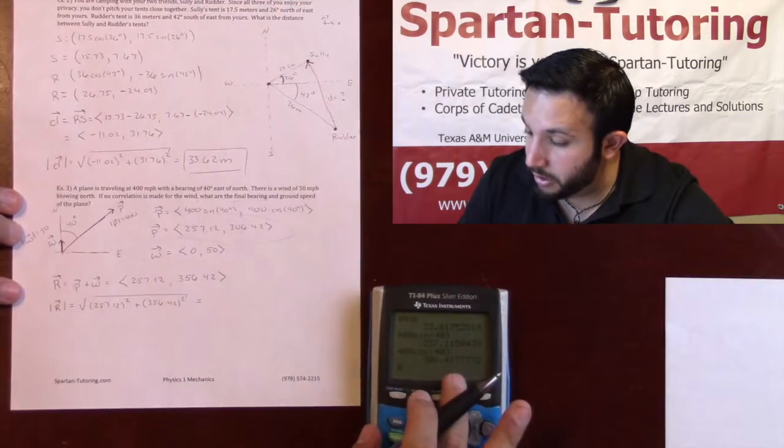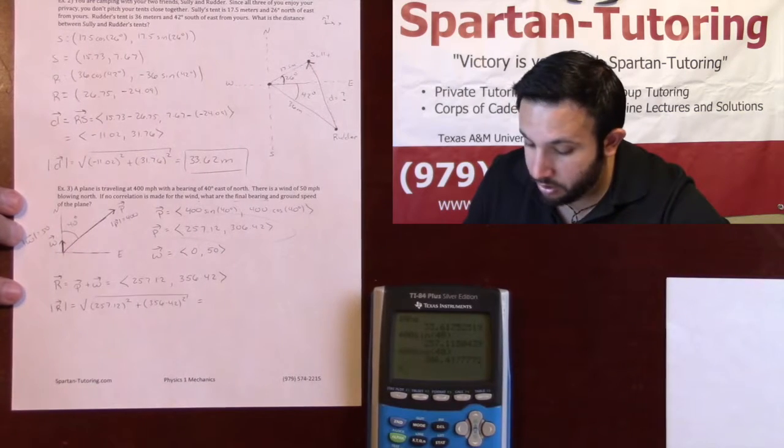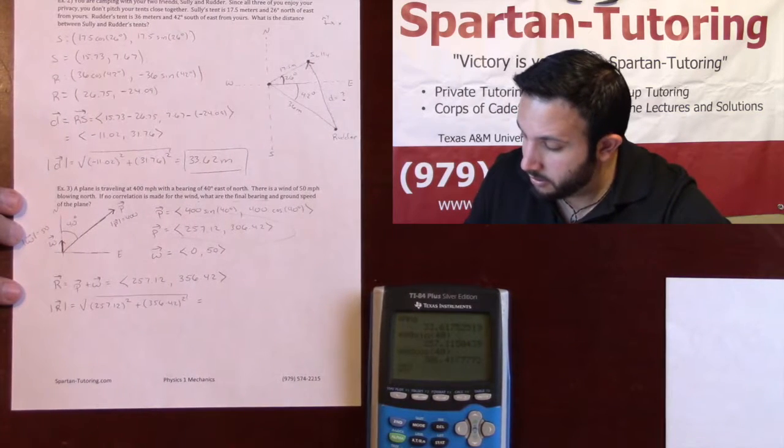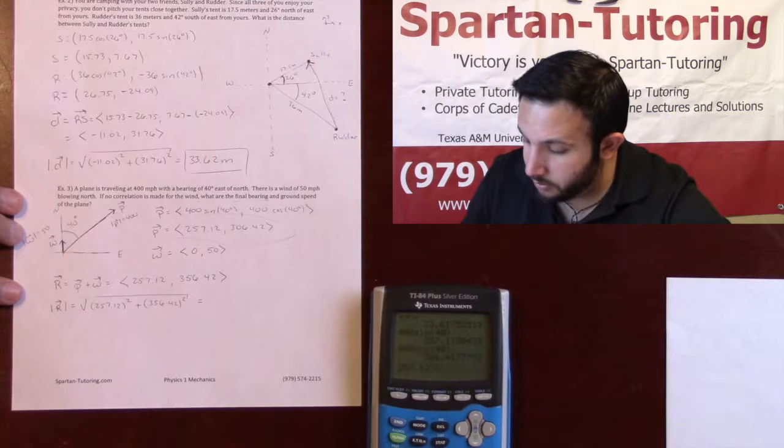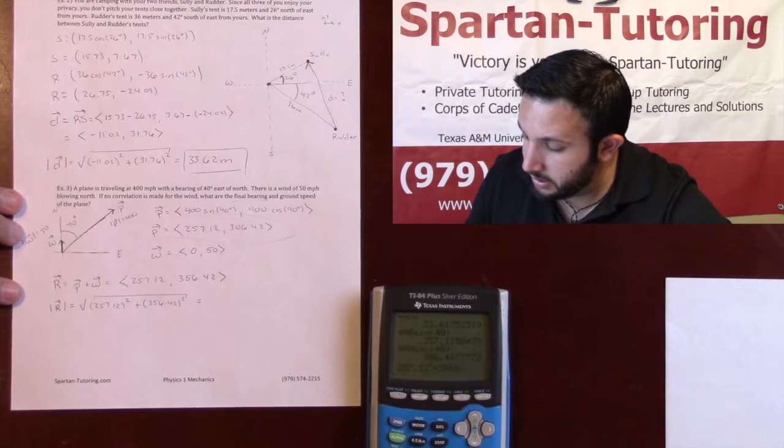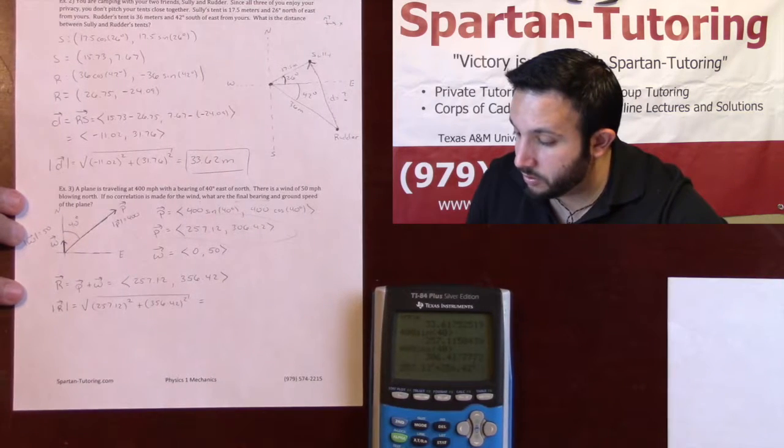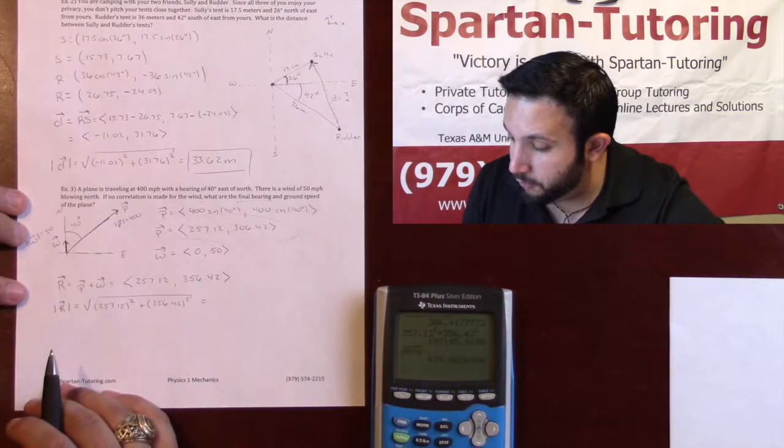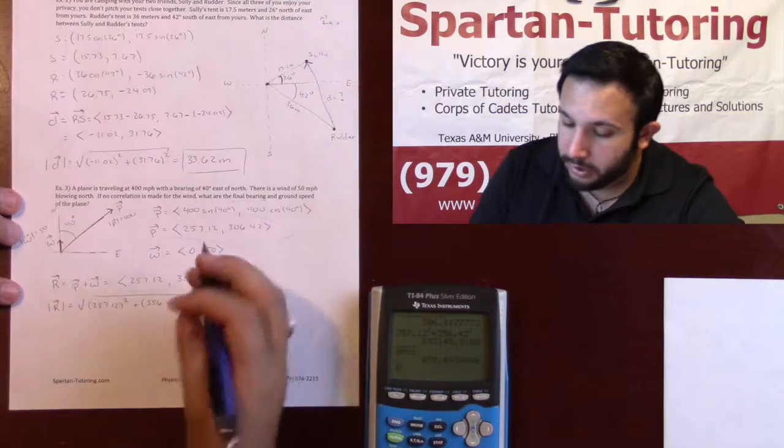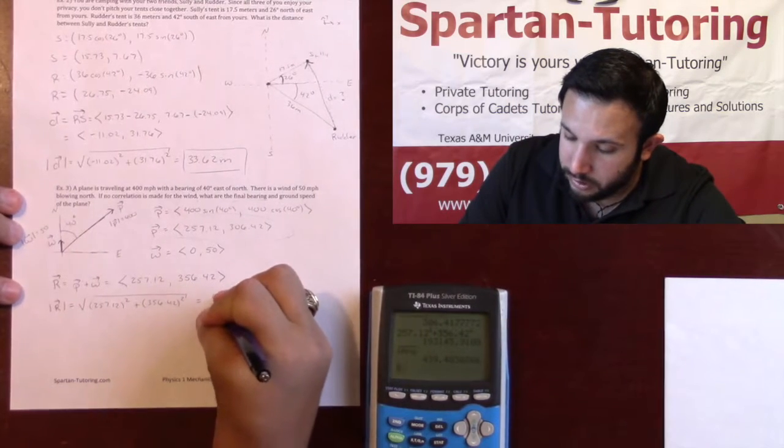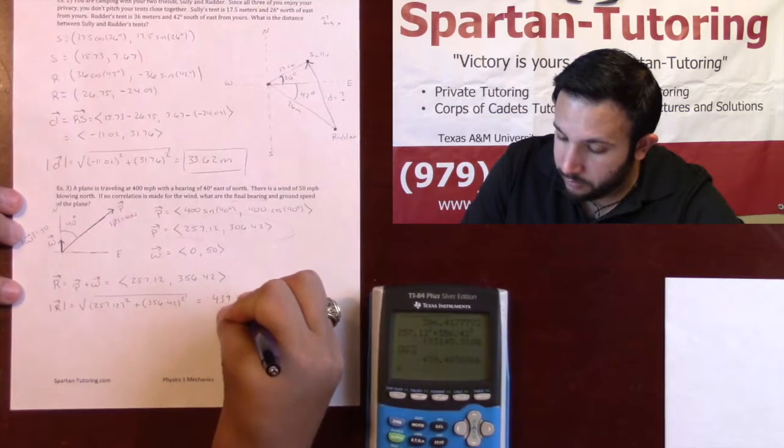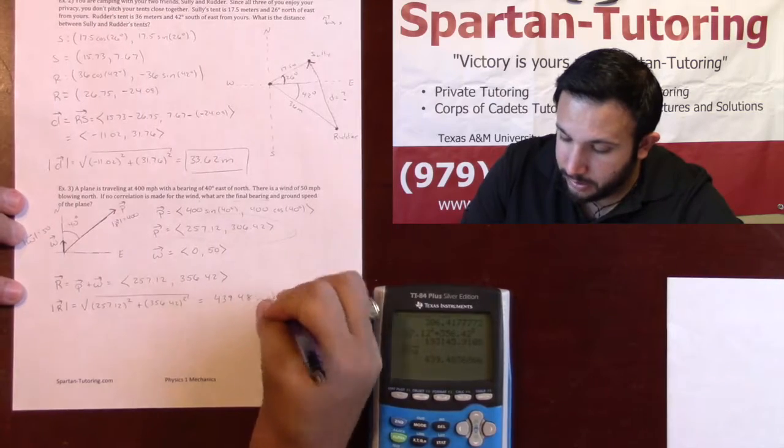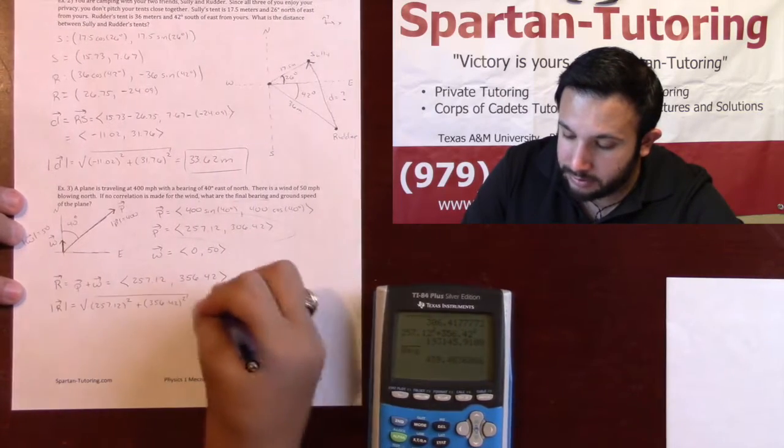Let's see what happens when we add those together. So 257.12 squared plus 356.42 squared. Don't forget to take the square root of all that, and we get 439.48 miles per hour, and that would be the ground speed.